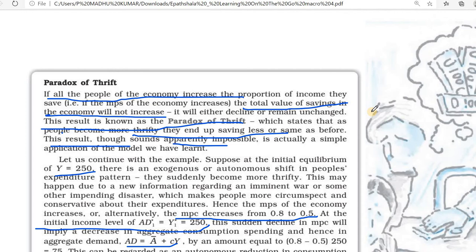Now we can study about the paradox of thrift. What is the paradox of thrift? If all the people of the economy increase the proportion of income they save — that is, MPS, marginal propensity to save — the total value of savings in the economy will not increase; it will either decline or remain unchanged. Suppose everyone decides to save more, meaning they are reducing their consumption and increasing their savings.